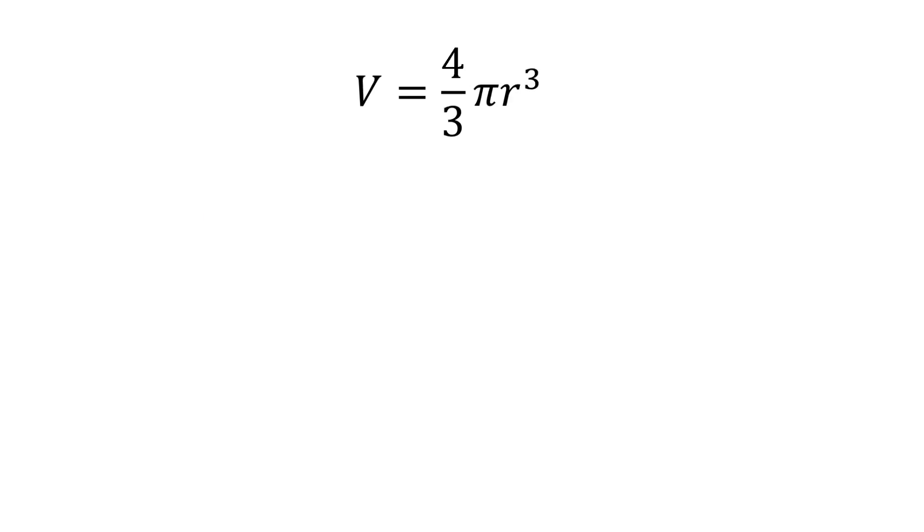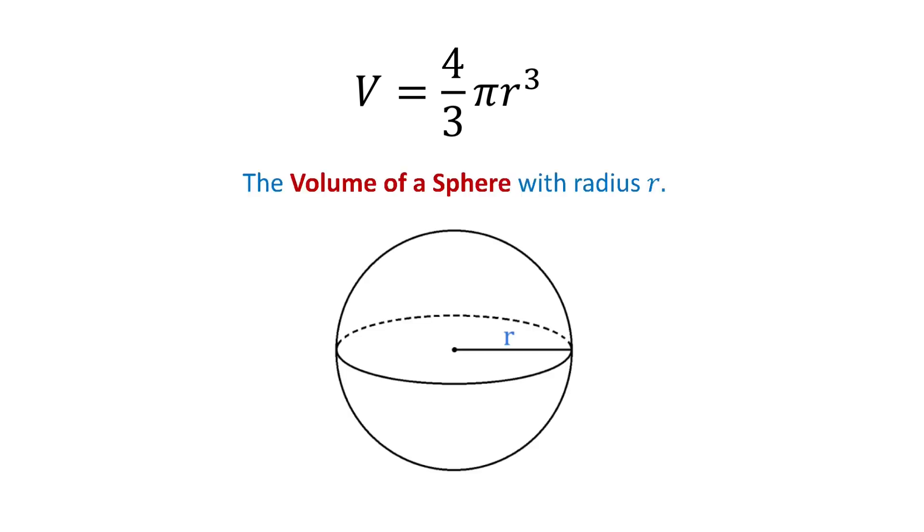Next, v equals 4 over 3 pi r cubed. This is the volume of a sphere with radius r.